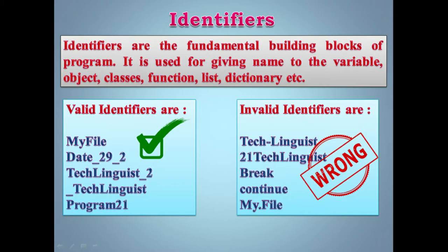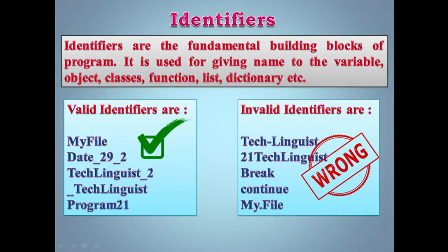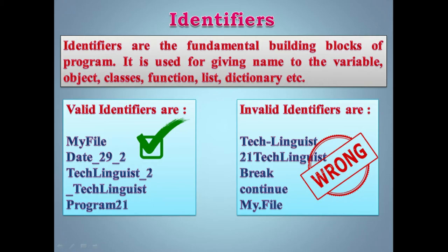First letter should be a character or underscore. Upper and lower case letters are different. Identifiers should not be keywords of Python — yeh sabse main important point hai. Matlab jo keywords hain unko hum log variable name, class name, object name, function name, ya list ke naam ke roop mein use nahi kar sakte. Valid identifiers mein underscore use kar sakte hain, jaise 'date_29'. Invalid identifiers mein dash use nahi kar sakte.